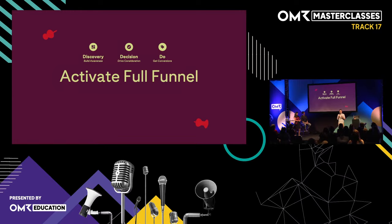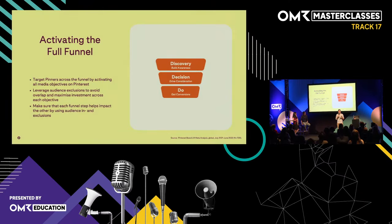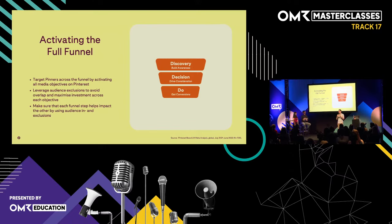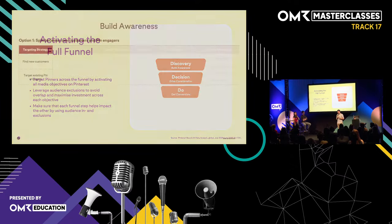Let's move on to a very interesting chapter: Activate Full Funnel. We covered a lot of theory, and I want to make sure you leave this masterclass with specific campaign examples on how to set them up. When we talk about full funnel, we want to target pinners across the entire funnel stages, making sure that every single stage of the funnel impacts the others in the best way — not just to get good results, but the best results. We can achieve this by using an intelligent audience strategy combined with targeting and a creative approach.